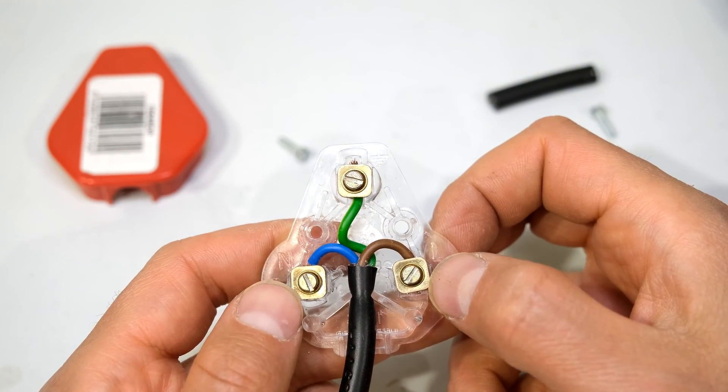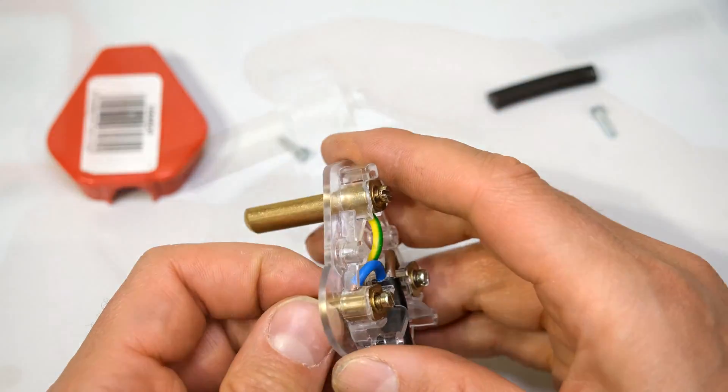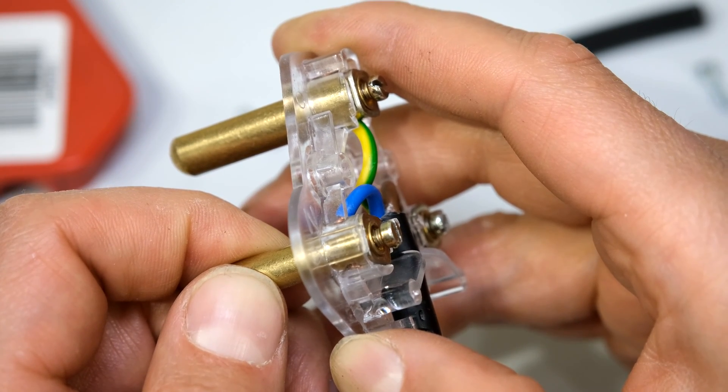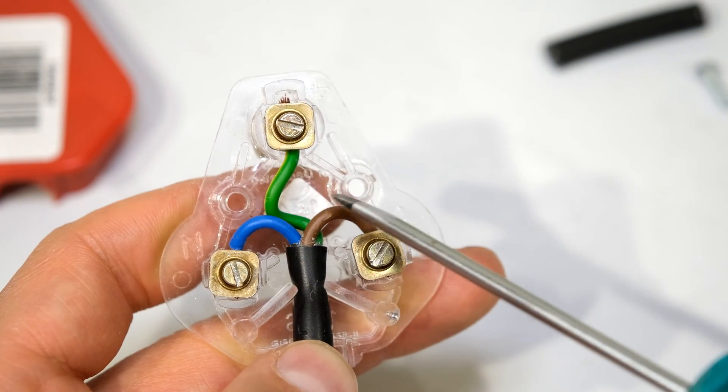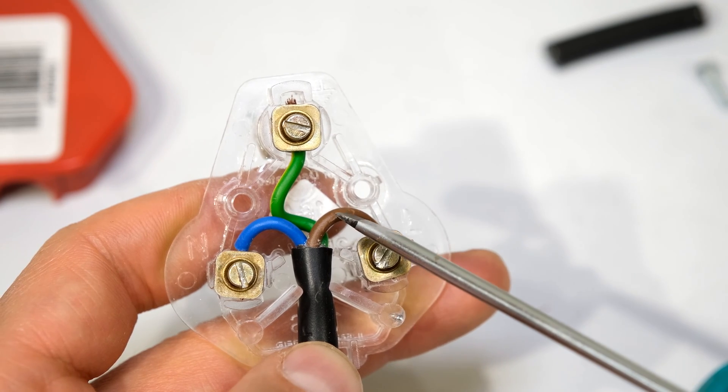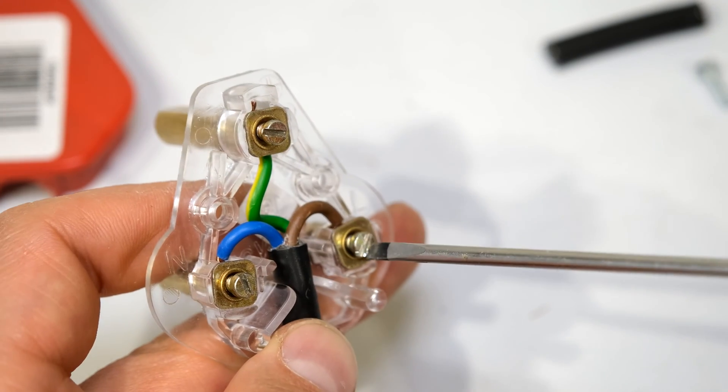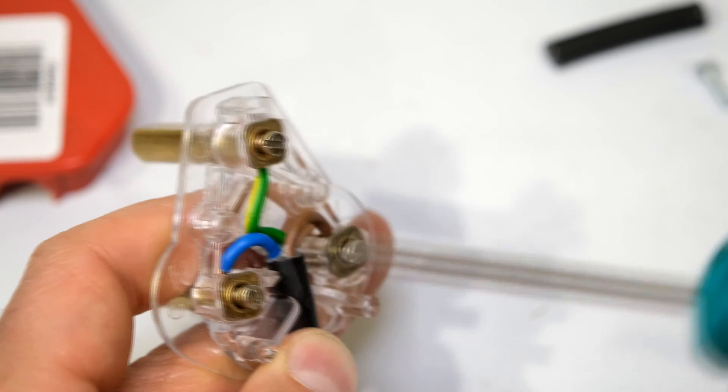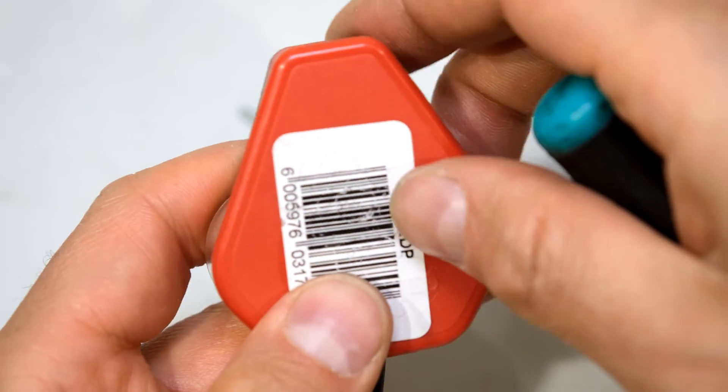Just before you close it, make sure these prongs are seated correctly. For example, that is not seated correctly, but now it is seated correctly. Make sure none of these wires are sitting on the screw post, or they'll get crushed when you put the plug top on. Do a last check. Make sure everything is tight. And now put your plug top on.